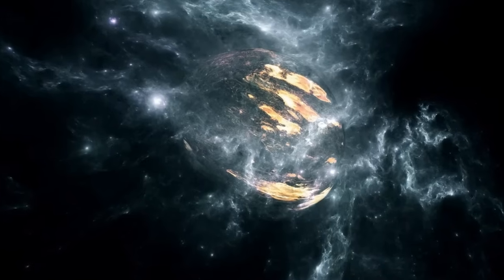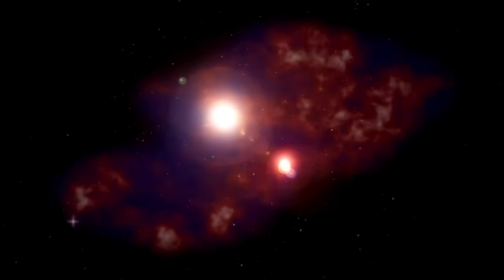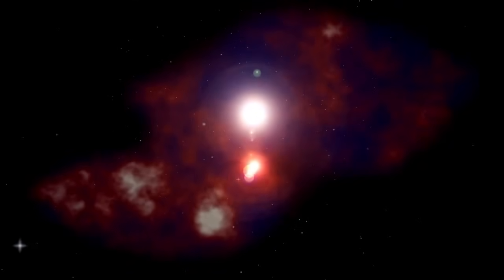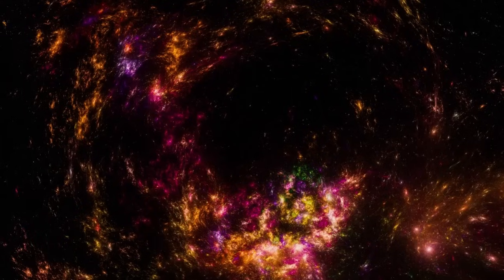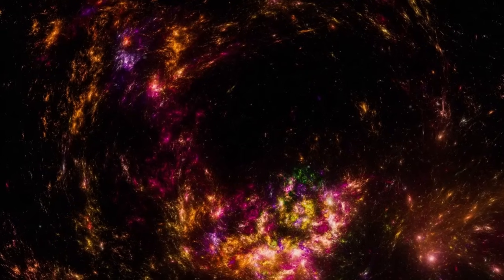Betelgeuse, in Orion's shoulder, is no run-of-the-mill star. It's a red supergiant, larger than 700 suns and roughly 20 times more massive. Astronomers have watched for decades as it has behaved erratically, expanding, getting dimmer, and exploding randomly.